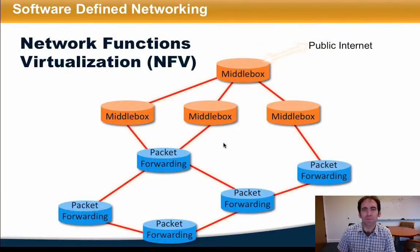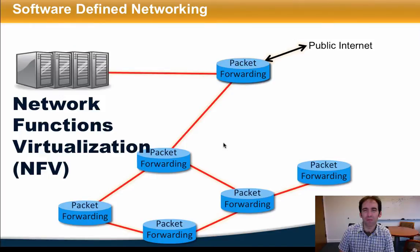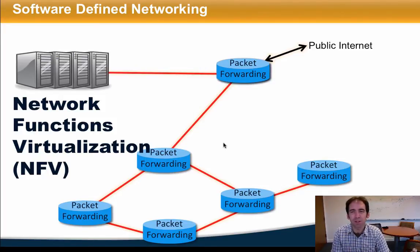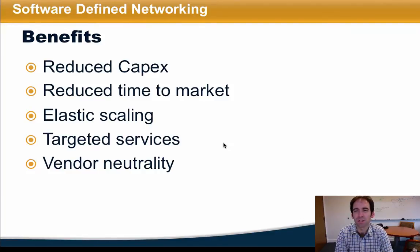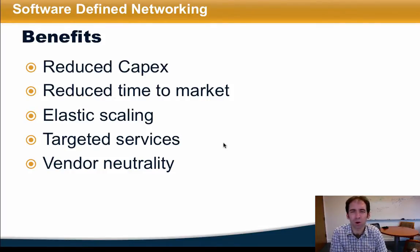To understand NFV, it helps to start by understanding the status quo, where middlebox functions are placed in separate monolithic middleboxes. In contrast, NFV places these functions in virtual machines or even virtual containers and distributes these functions across the network. By decoupling these functions from the hardware that hosts them, operators gain increased flexibility over how packet processing is performed. Some of the benefits of NFV include reduced capital expenditures and time to market, the ability to scale middlebox functions up and down as network demand changes, and developing services specialized for particular applications in ways that are independent of individual hardware vendors.